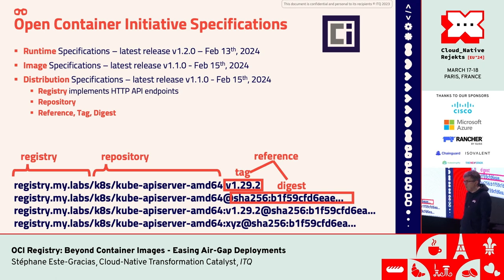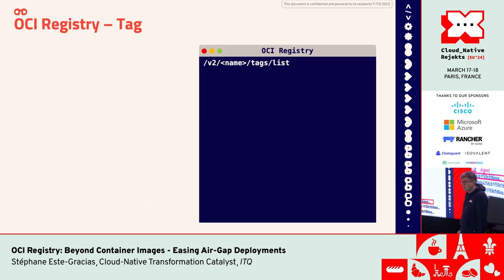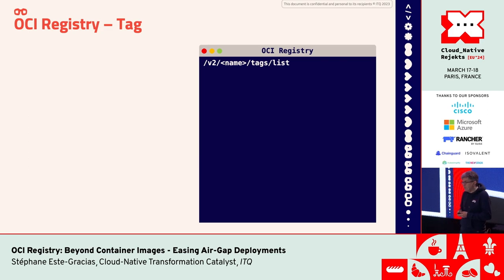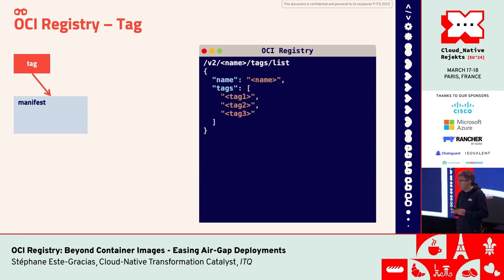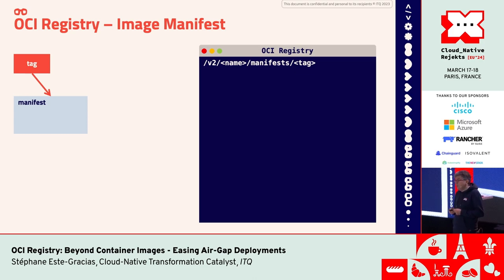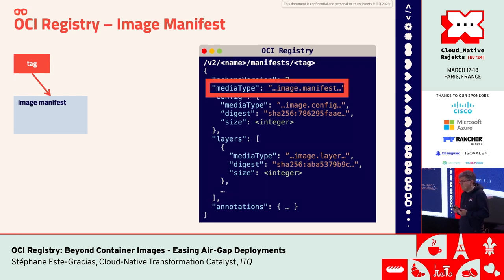In the coming slides, I will go through manifest, config, blobs, and layers. When you try to find something in your registry, you find it back with a tag using the API with the name of the repository, then tag list to get the list of tags in that repository. The tag effectively points to a manifest. To find this manifest, you use the endpoint with the namespace, the repository name, slash manifest, slash the tag name, and you get back a JSON document representing an image manifest.